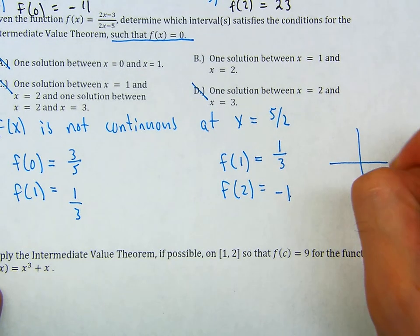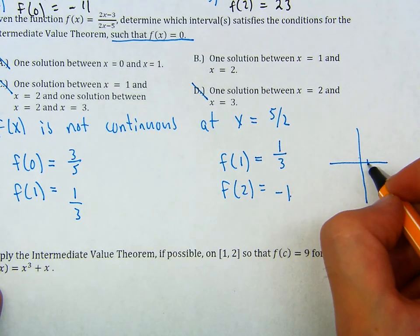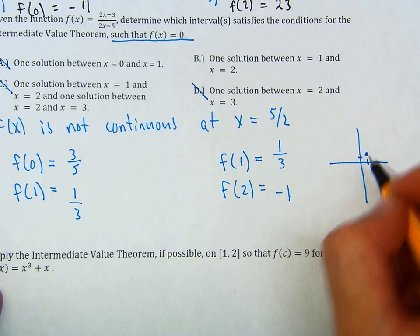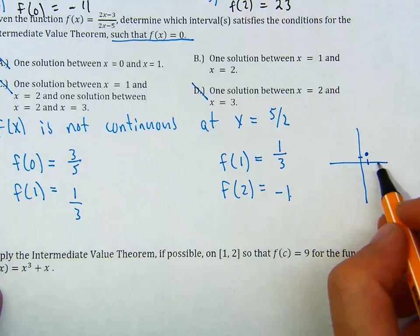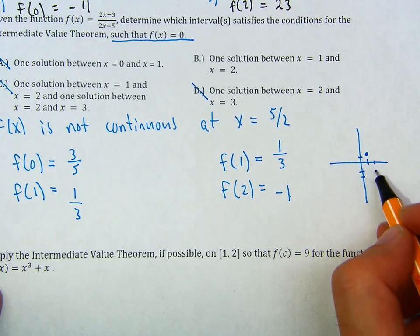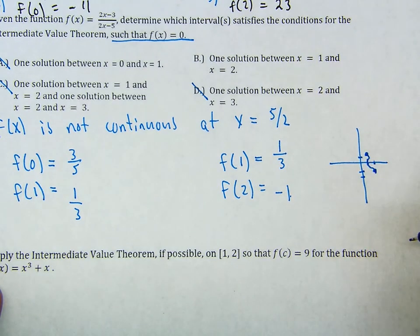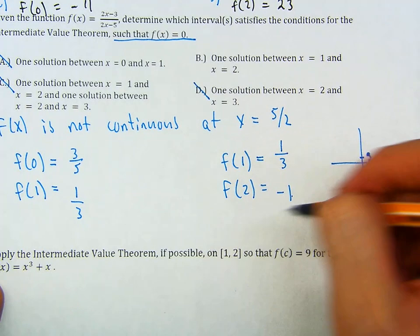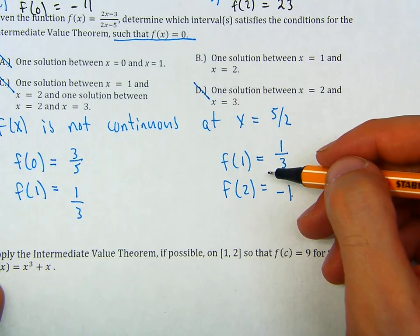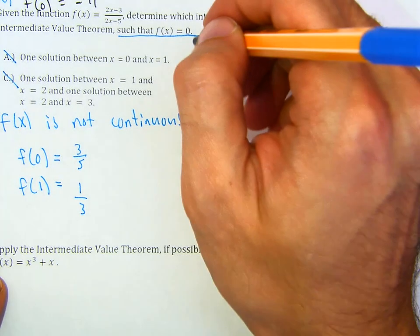This point f(1) = 1/3 is above the x-axis, whereas the point (2, -1) is below. Notice that between these two points, there has to be a root. And that's what this justification is saying — by the intermediate value theorem. So the answer is part B.